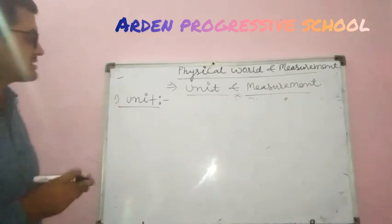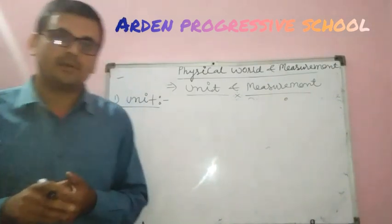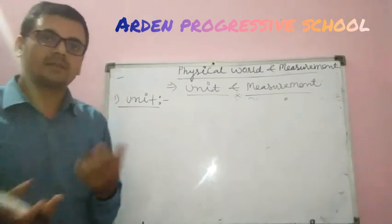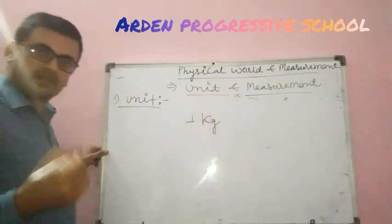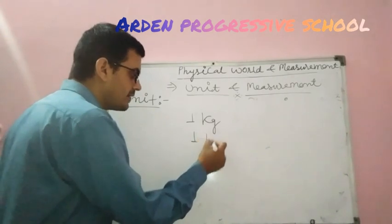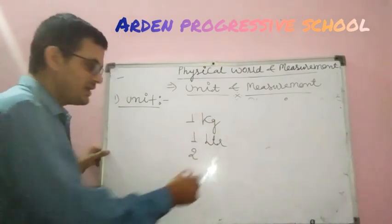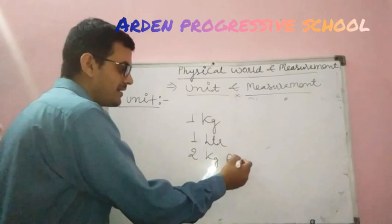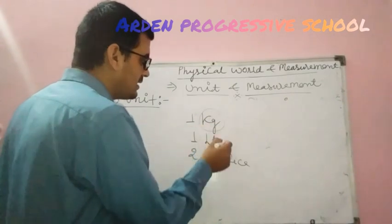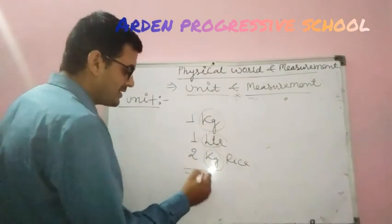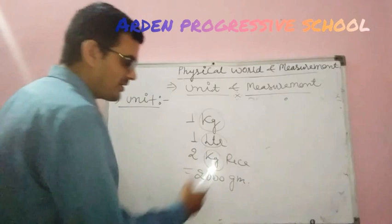I am explaining this topic with an example. Whenever we go to a market or shop, we say to the shopkeeper: 'Give me one kg of sugar,' or 'one litre of milk,' or 'two kg of rice.' Have you noticed: kg, litre, gram — in one kilogram there are 1000 grams, so two kg means 2000 grams.